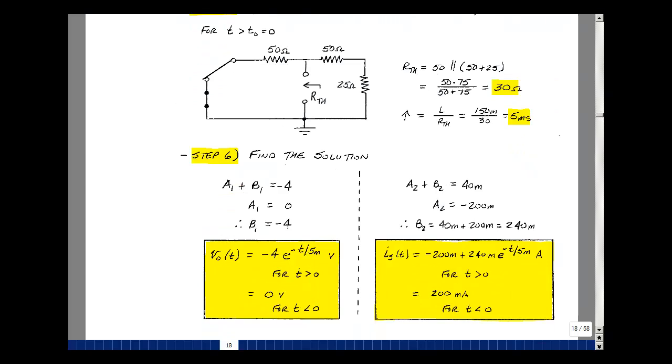And our final step, we can put all this together. A1 plus B1 was minus 4. A1 was 0, so therefore B1 is minus 4. So V out is minus 4 E to the minus T over tau for T greater than or equal to 0. We found that it was 0 for T less than 0. When T equals 0 here, we get minus 4, so we have a discontinuity at T equals 0. Current in the resistance, solve for its value of B2. We have A2 plus B2 is 40 milliamps. A2 is minus 200 milliamps, so B2 is 240 milliamps. This is true for T greater than or equal to 0. For T less than 0, we found that it was 200 milliamps. When T equals 0 here, we get 40 milliamps, so we have a discontinuity for the current in this resistance. This is how we solve for an RL switching circuit using a single-pole double-throw switch.